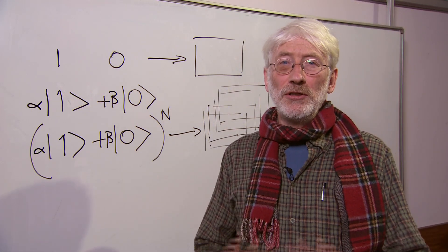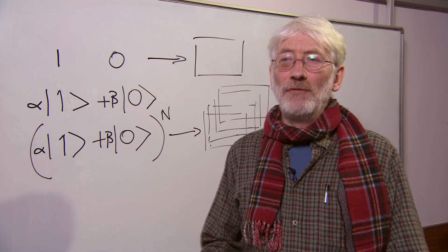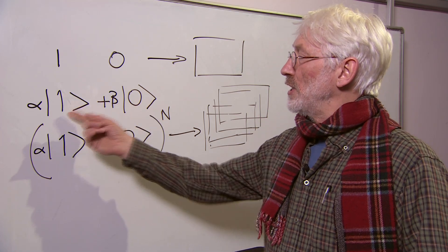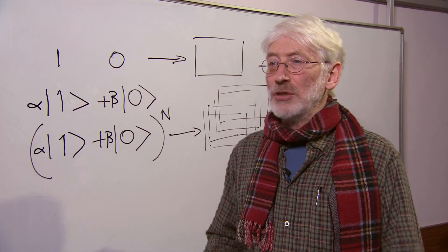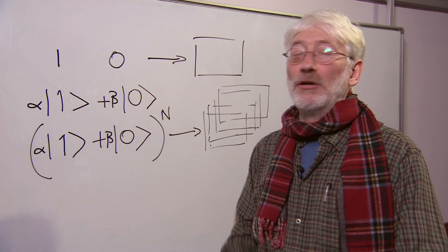In the case of a quantum computer, we start off with a different definition of the bit. The bit is now a superposition of ones and zeros, in other words it's a sort of parallel one and zero at the same time.